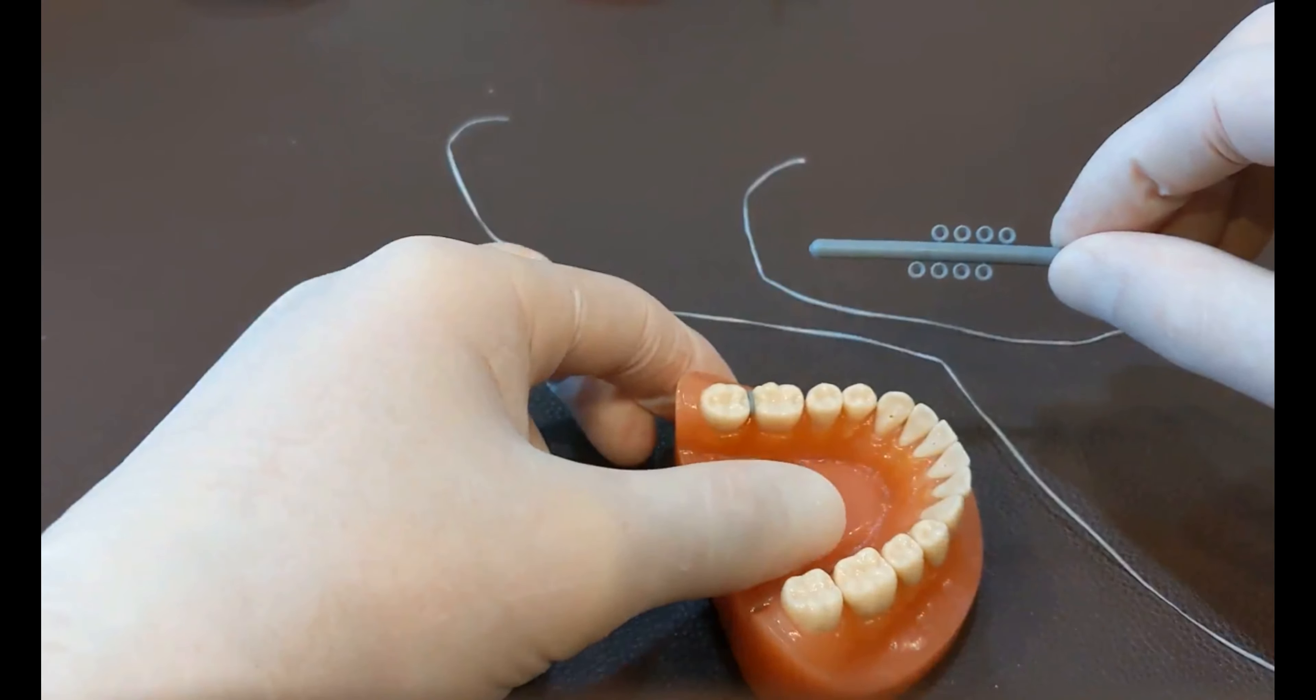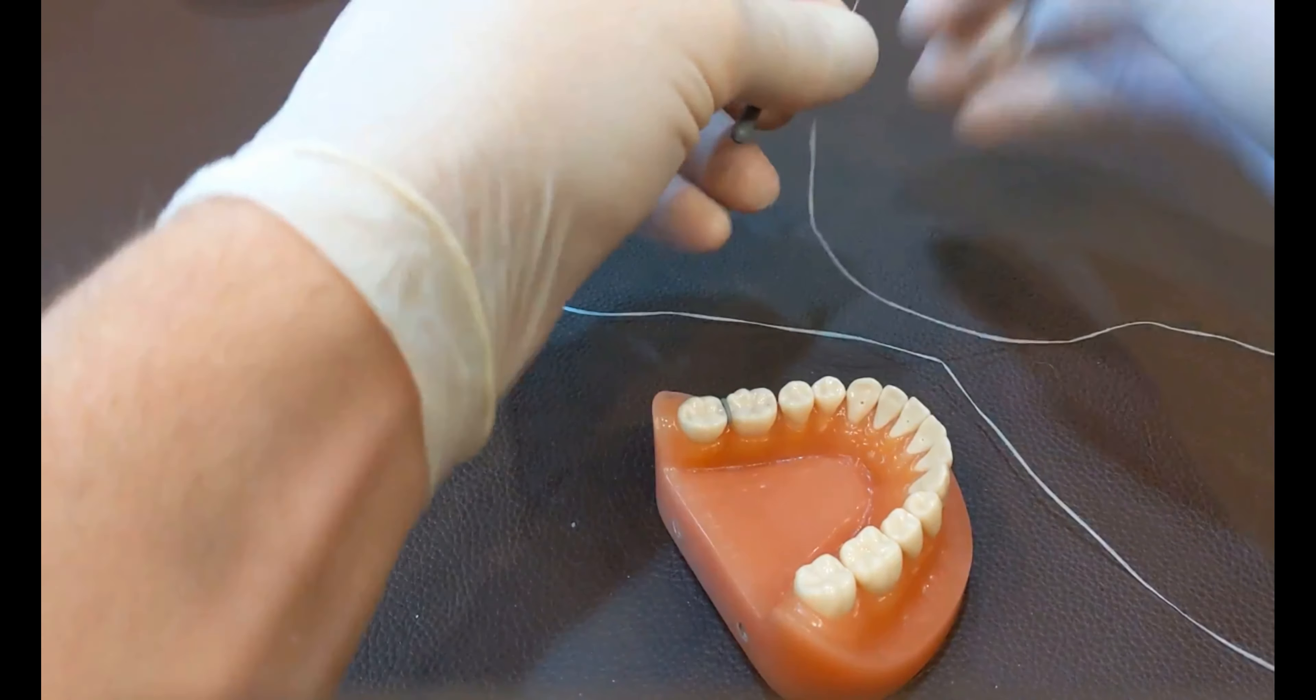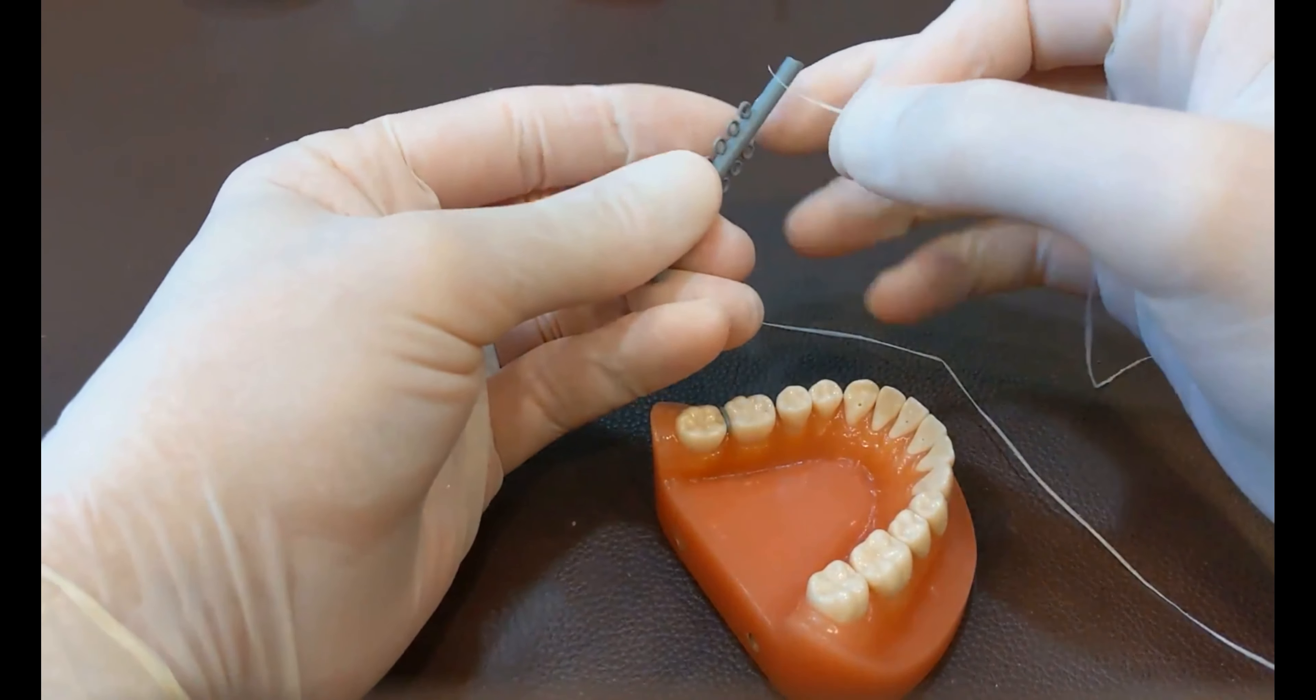So what you do is you get your separators. They come in a little thing like this. There's two ways of putting them in. This is the floss way. This is the way I personally prefer.